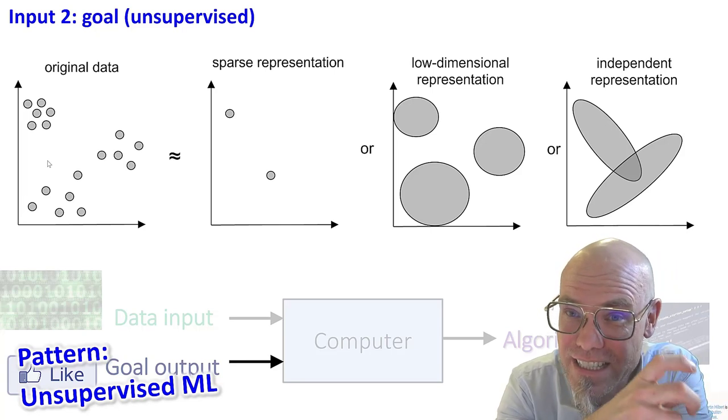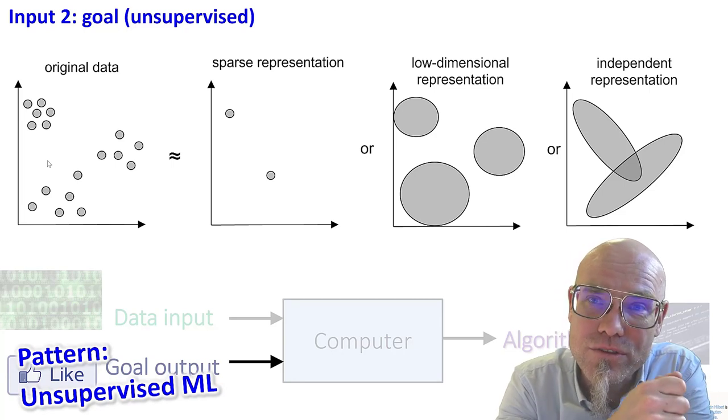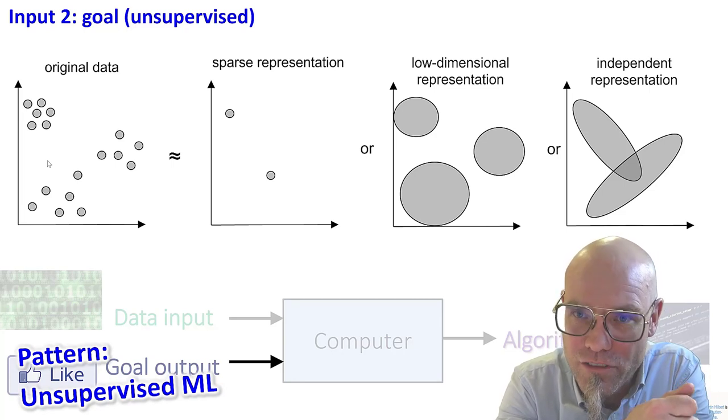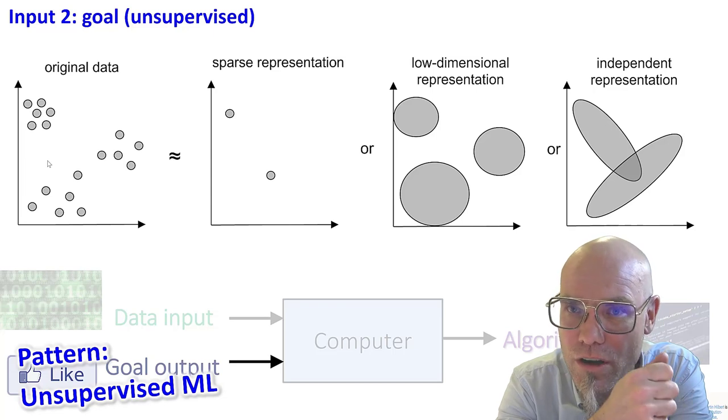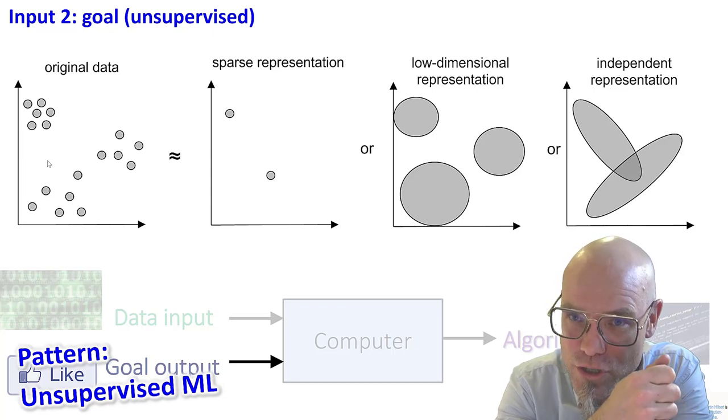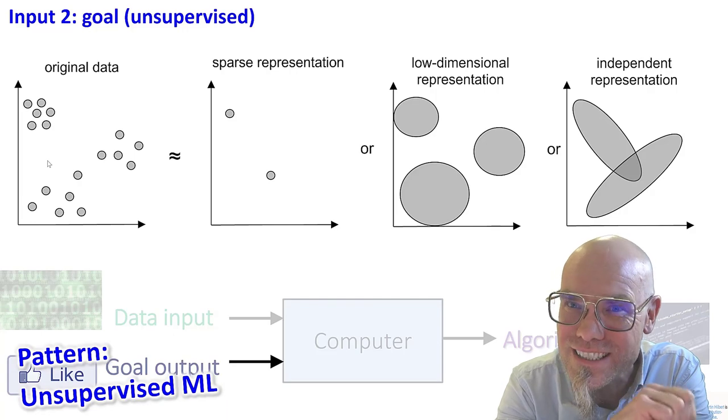And that's still given by the researcher. It matters if you say like, use a Markov model for machine learning or use a neural net. The machine will produce something different. So you are still giving it the goal.